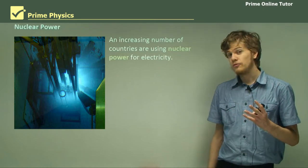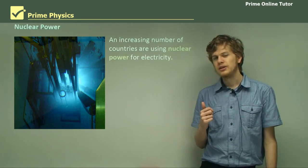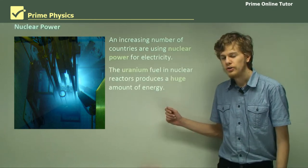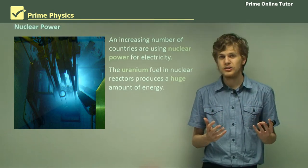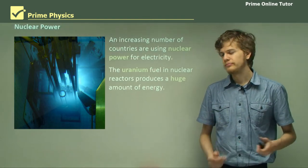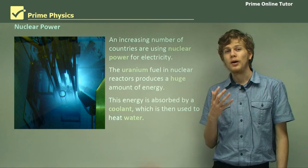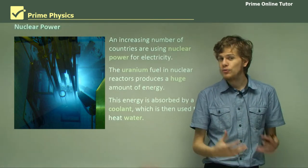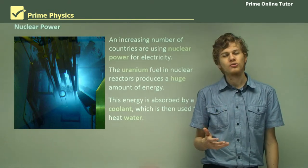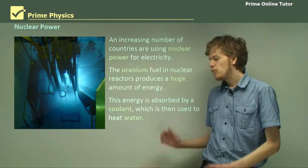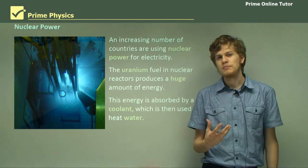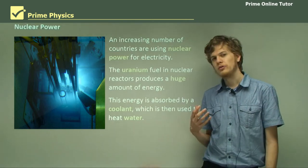An increasing number of countries are using nuclear power instead of fossil fuels to produce electricity. The uranium fuel in nuclear reactors produces a very large amount of energy. The energy is absorbed by a coolant, which carries heat out of the reactor, and that coolant is used to heat water so that the water itself doesn't become radioactive. The coolant heats the water to boiling point, where it becomes steam and blows through a turbine, just the same as if we were heating the water with a coal fire.